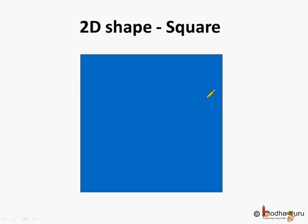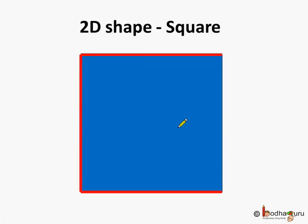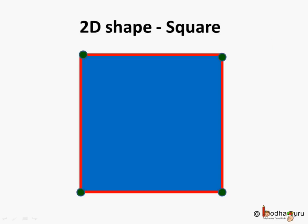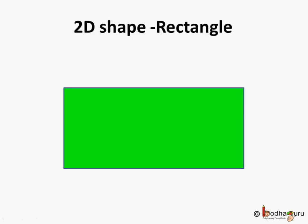We already know this is a square whose all sides are equal. So how many sides are there? One, two, three, four. A square has four sides and how many corners are there? We know when two straight lines meet they make an angle, and here we will call it a corner. So how many corners does a square have? It has one, two, three and four corners. So a square has four sides and four corners.